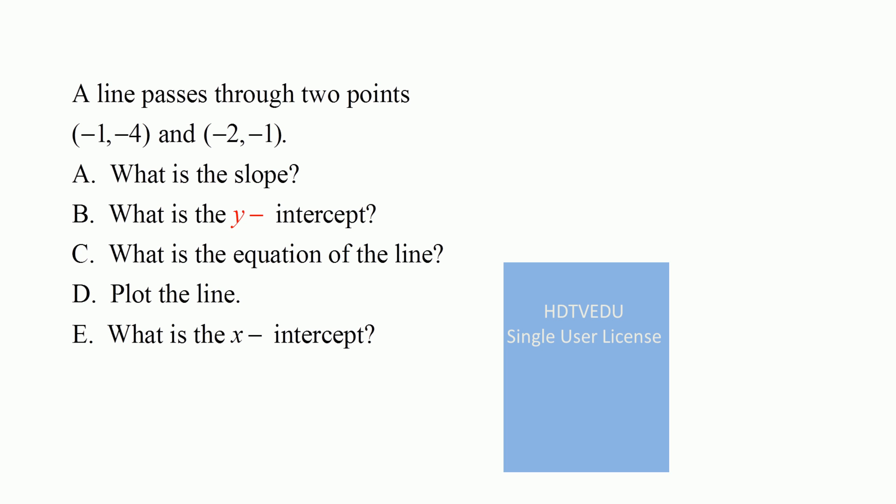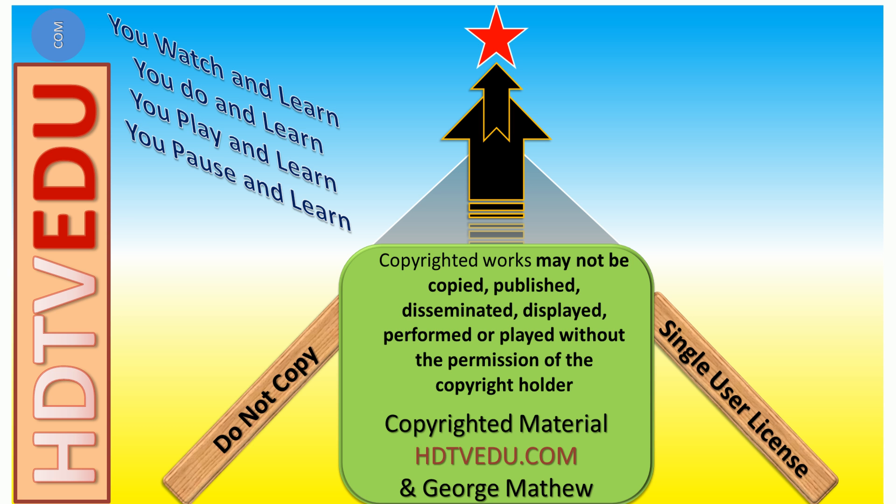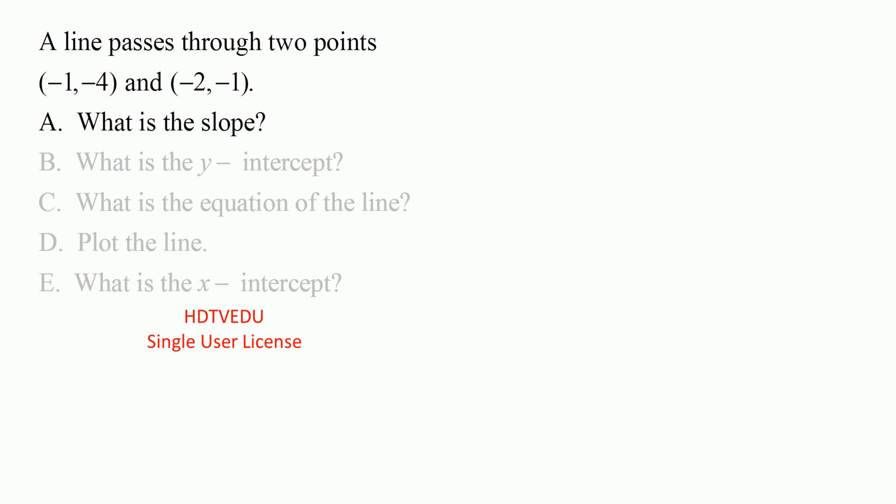A line passes through negative 1 negative 4 and negative 2 negative 1. Part a: what is the slope? Part b: what is the y-intercept? Part c: what is the equation of the line? Part d: can you plot the line? Part e: what is the x-intercept?